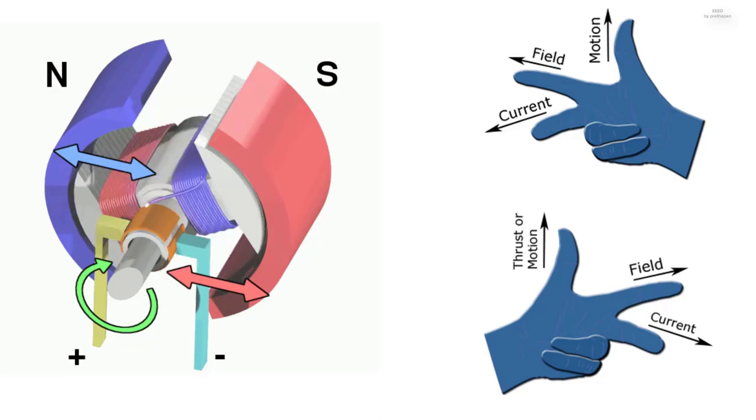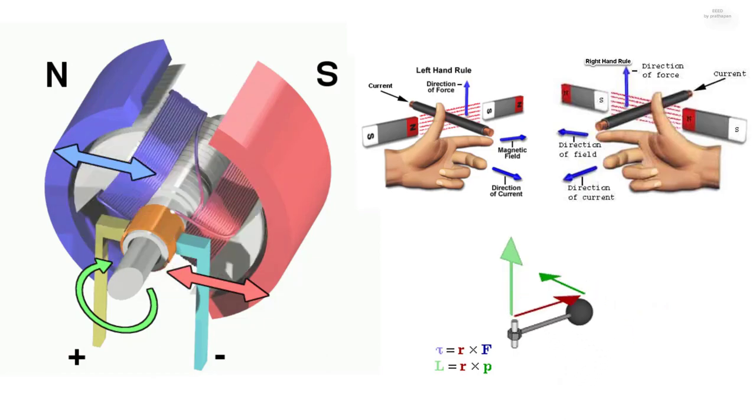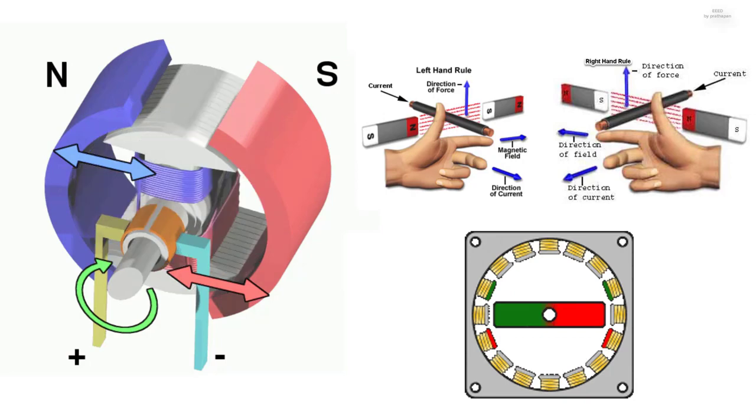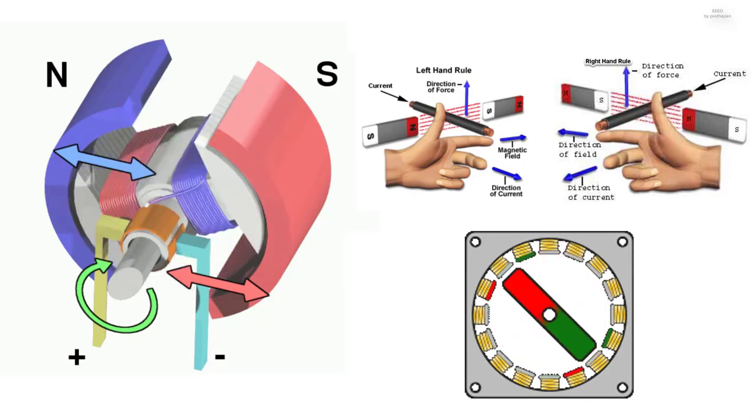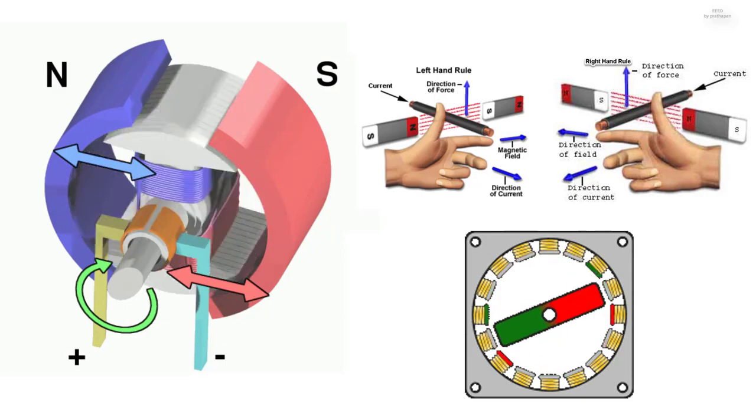The right and left hand are used for generators and motors respectively. The direction of the mechanical force is the literal one. The direction of the magnetic field is from north to south. The direction of the electric current is that of conventional current, from positive to negative.